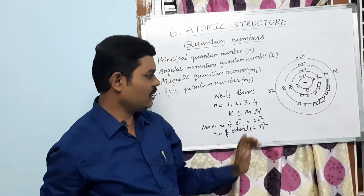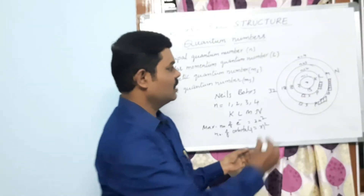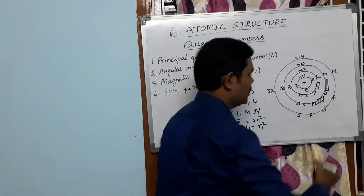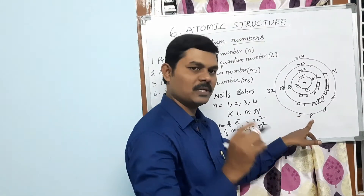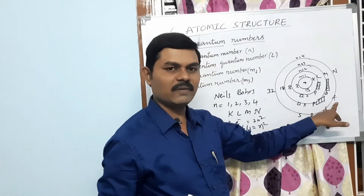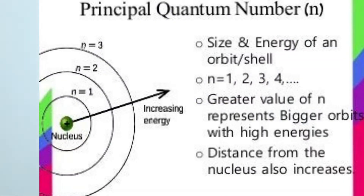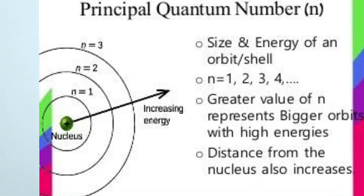The M shell has 3 subshells — S, P, D — with a total of 9 orbitals. For n=4, there are 16 orbitals and 4 subshells: S, P, D, and F. The S subshell has 1 orbital, P subshell has 3, D subshell has 5, and F subshell has 7 orbitals, totalling 16. The principal quantum number also gives information about the size and energy of the main shells.